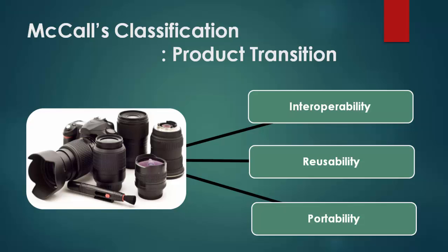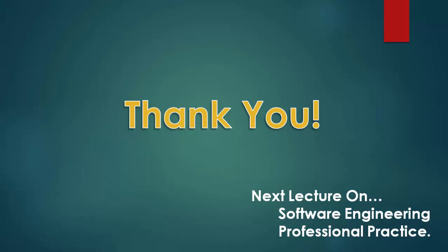The last category is product transition. These qualities measure the adaptability of software to new environments. Interoperability, reusability, and portability are the qualities measured here. Both users and developers value these attributes. That covers McCall's classification.